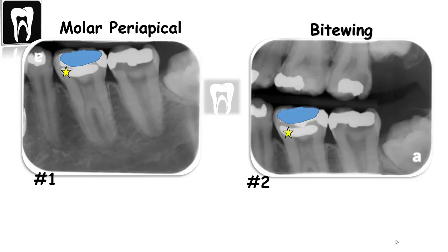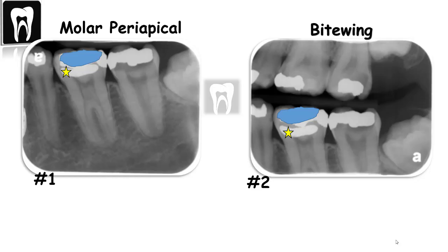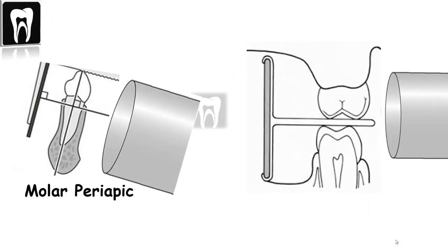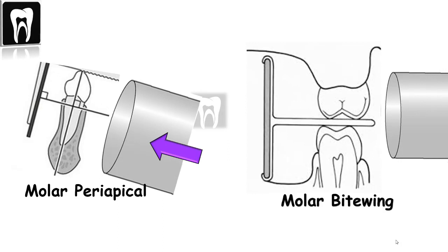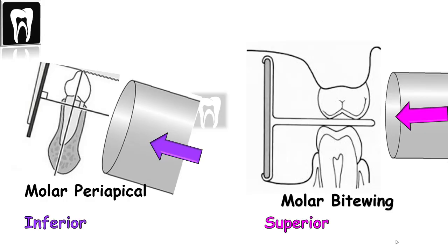Step three: determining which direction the images appear to move from one to two. Going from a periapical radiograph — which has a negative angulation — to the bitewing radiograph, the tube position would be superior or parallel. So we're going from inferior to superior. This would be our vertical angle change.